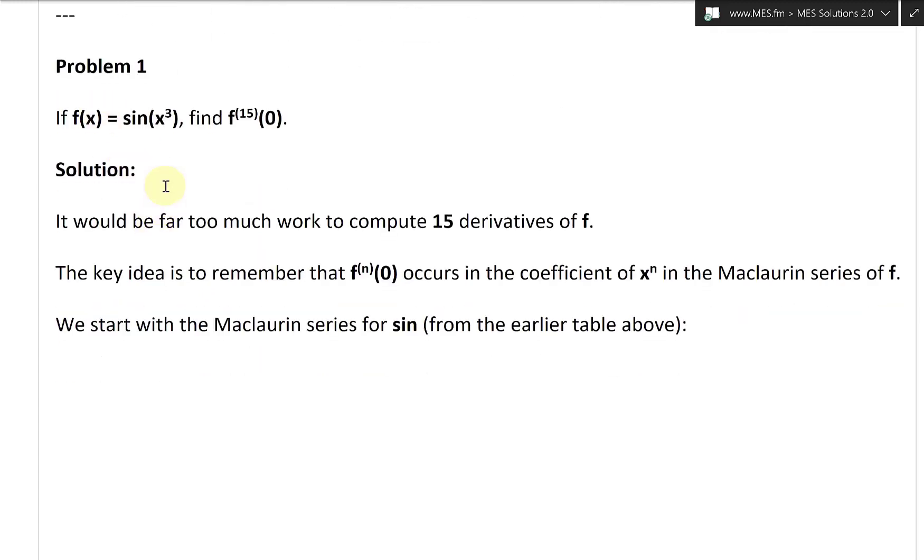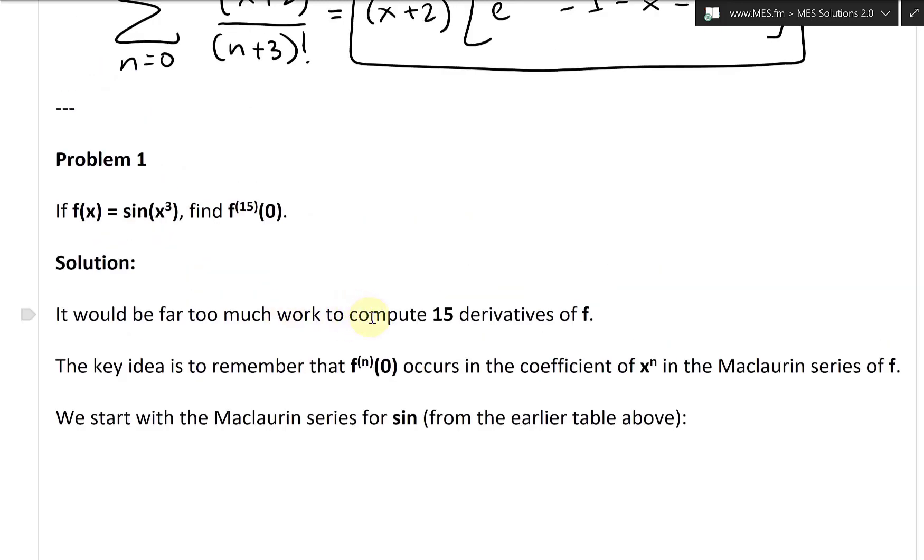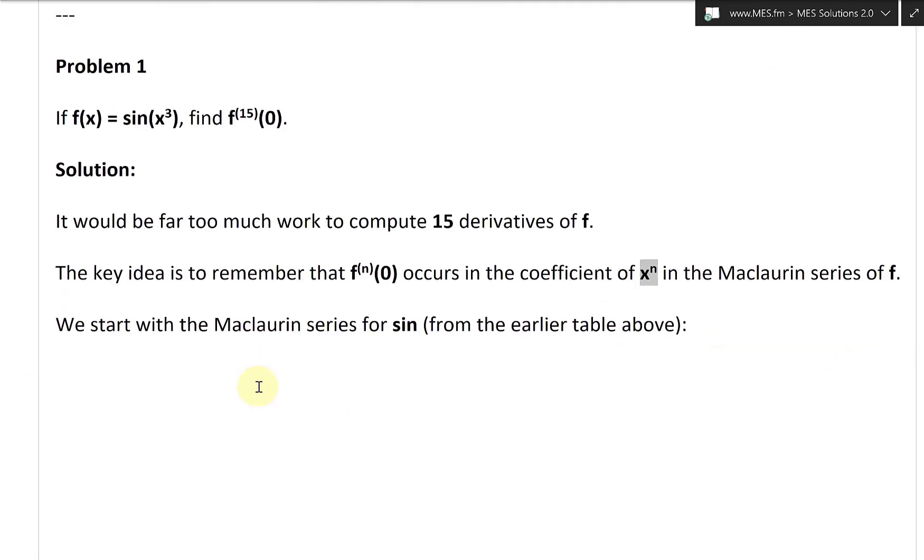All right, so let's take a look at the solution. It would be far too much work to compute 15 derivatives of f. So the key idea is to remember that the nth derivative at zero occurs in the coefficient of x to the power of n in the Maclaurin series of f.